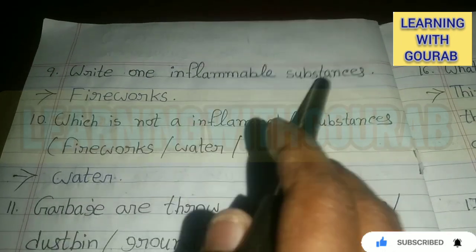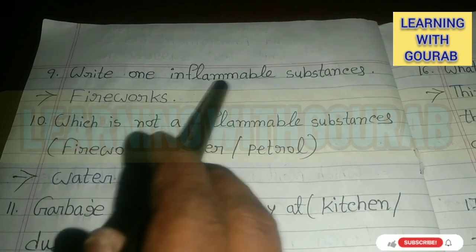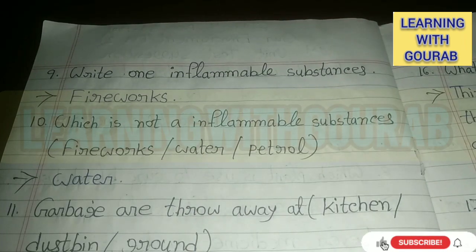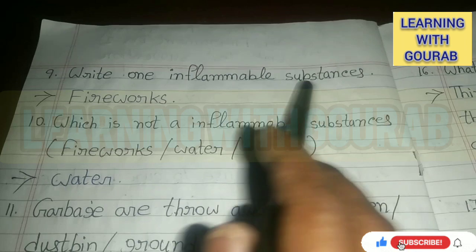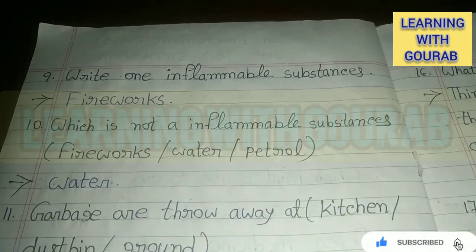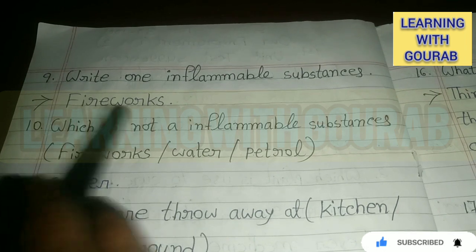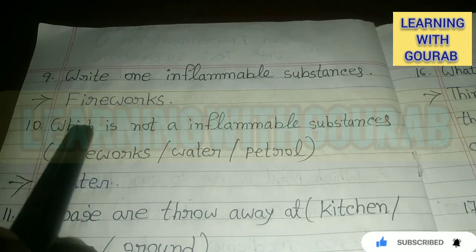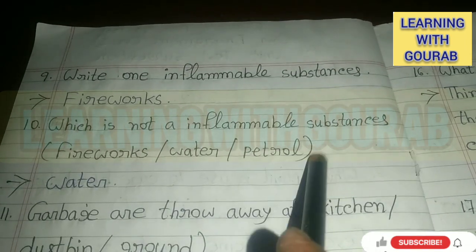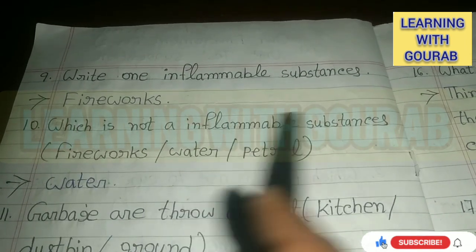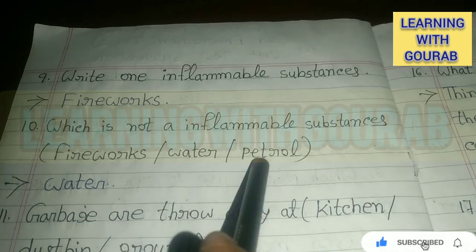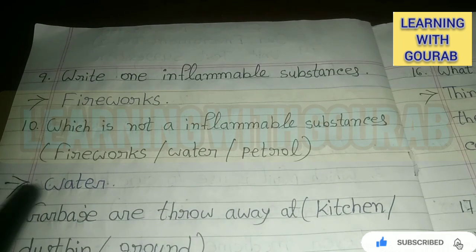Write one example of inflammable substances. Answer: Fireworks. Which is not an inflammable substance — fireworks, water, or petrol? Answer: Water.